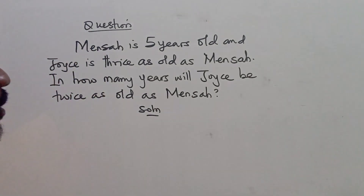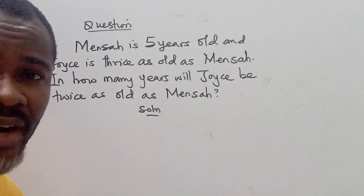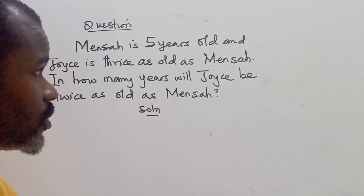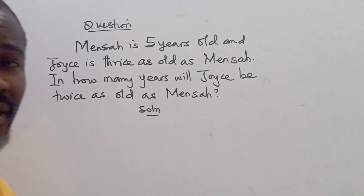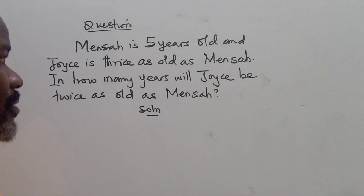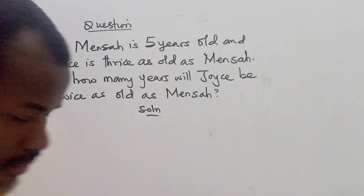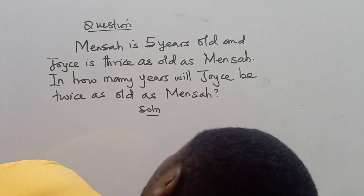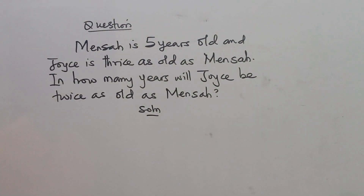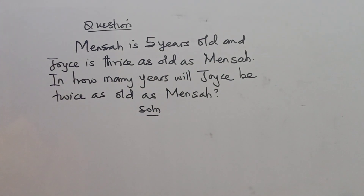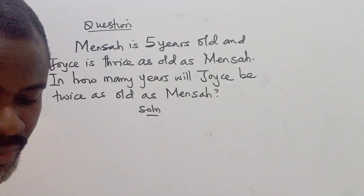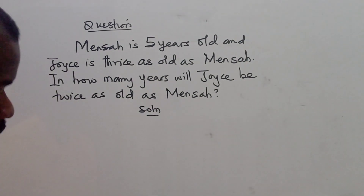So the problem reads: Mensa is 5 years old and Joyce is twice as old as Mensa. In how many years will Joyce be twice as old as Mensa? That is the simple question we have here on the board.